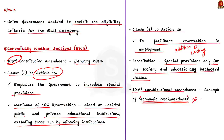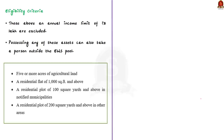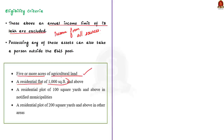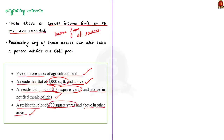Now let's see the criteria for identifying economically weaker sections. The main criterion is that those above an annual income limit of 8 lakh are excluded from this category, and this includes family income from all sources. Apart from this, possessing any of the following assets can also take a person outside the EWS pool: having 5 or more acres of agricultural land; a residential flat of 1000 square feet and above; a residential plot of 100 square yards and above in notified municipalities; or a residential plot of 200 square yards and above in other areas.